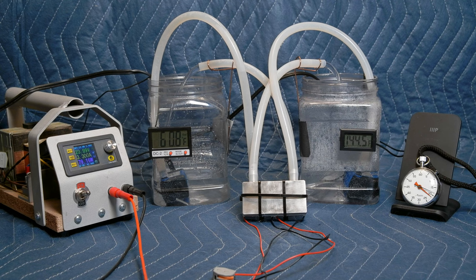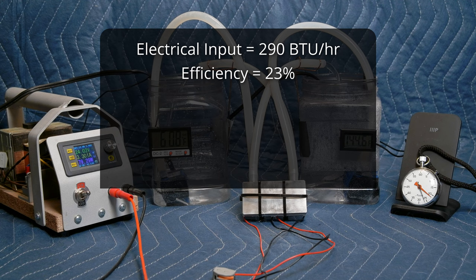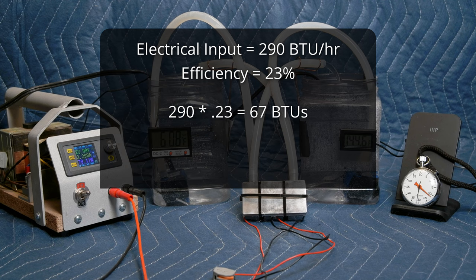Remember when I said according to the power supply, we averaged about 85 watts or 290 BTUs per hour? Using our graph data, we also figured out a cooling efficiency of 23%. 23% of 290 is 67 BTUs for two Peltier devices running at 12 volts each.